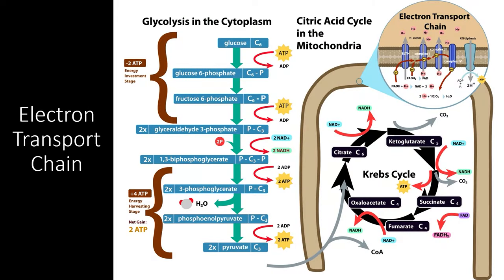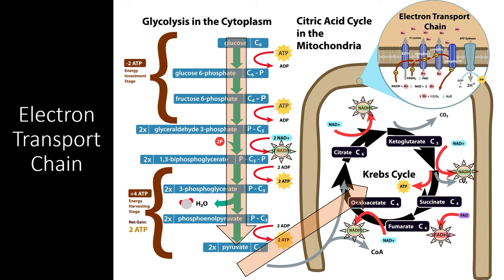Just to recap, we're looking at the overall process of aerobic respiration, which is one of two types of cellular respiration. We've seen how glucose is broken down into pyruvate through the process of glycolysis. Then, when this pyruvate molecule enters the mitochondrial matrix, it enters the Krebs cycle. Throughout this whole process, many electron carrier molecules are filled with electrons and hydrogen atoms. These electron carrier molecules make their way to the electron transport chain located on the inner mitochondrial membrane.